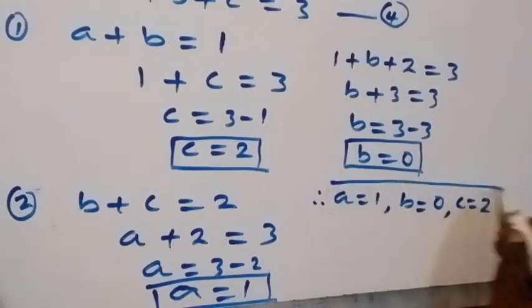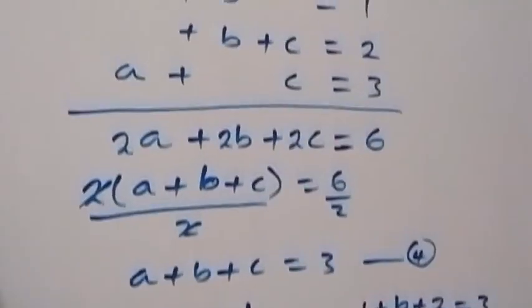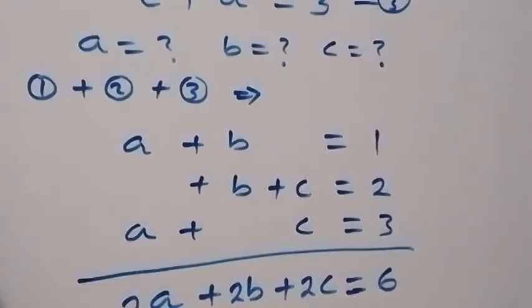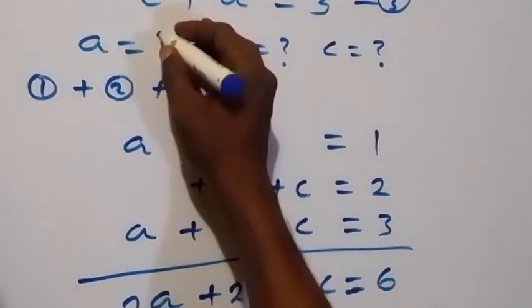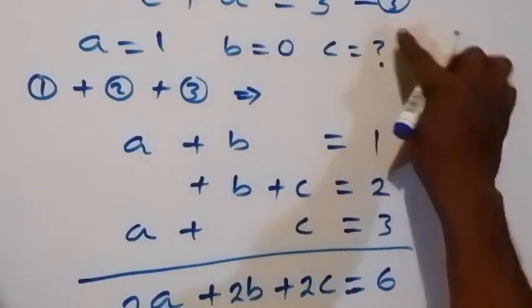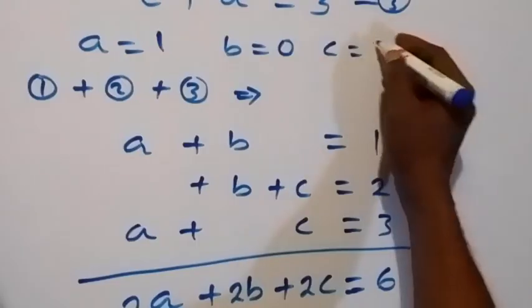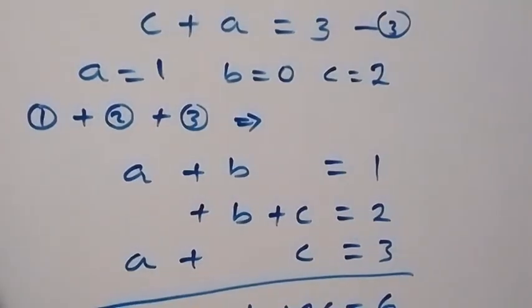So, a equals to 1, b equals to 0, and c equals to 2. So, this is the solution to this given problem. And then, we have come to the end of this class, which we have already solved for a, which is 1 here. And b, which is 0 here. And c, which is 2 here. So, when we put this value into these equations, we discover that it satisfies the given problem. Thank you for watching.